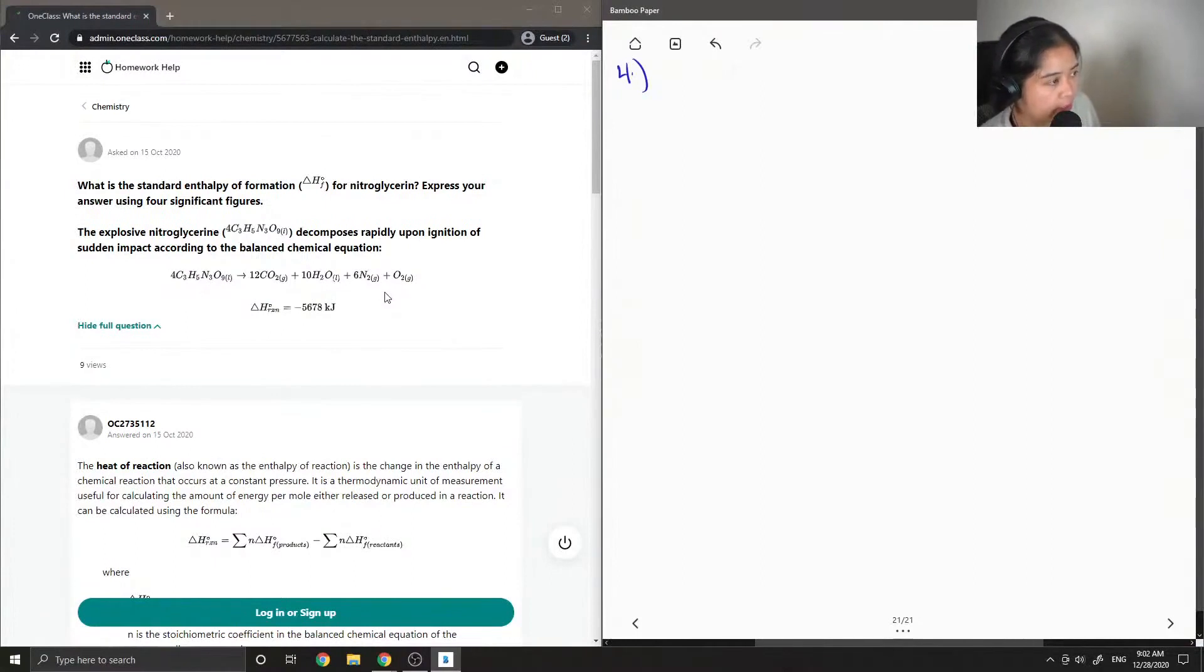Express your answer using four significant figures. The explosive nitroglycerin decomposes rapidly upon ignition or sudden impact according to the balanced chemical equation. So let me write this down as well.